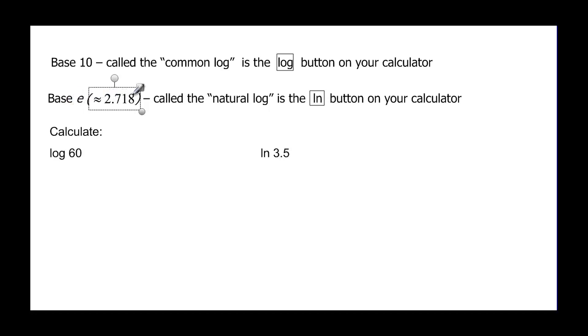And then base e is 2.718 blah blah blah blah blah blah. It's a natural number. It's called the natural log, and it's ln. That's not an i. It's an l, and in Latin this would be logarithmic naturalis, or something like that. So that's why it's ln. The l comes first, in case you care.